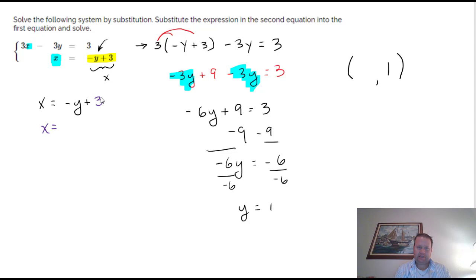And now I'm just going to replace the y with a 1. So instead of saying negative y, it's going to be negative because the minus doesn't change, and then the y is just a 1. I'm just putting a 1 right there, plus 3, and we get x is 2. So our final ordered pair would be 2 comma 1.